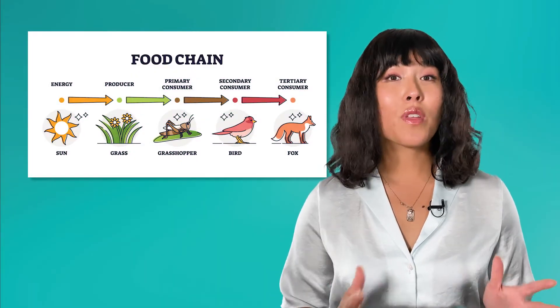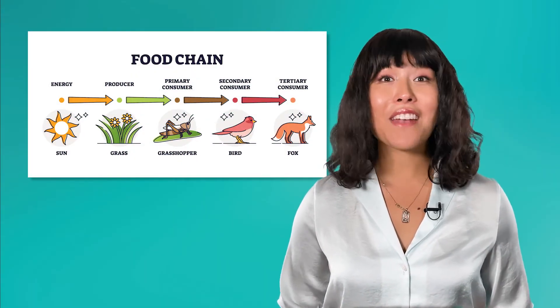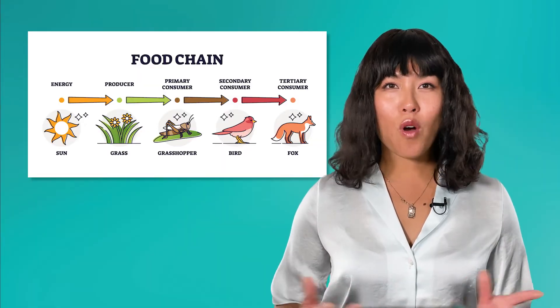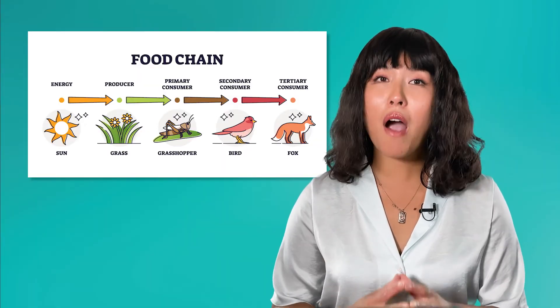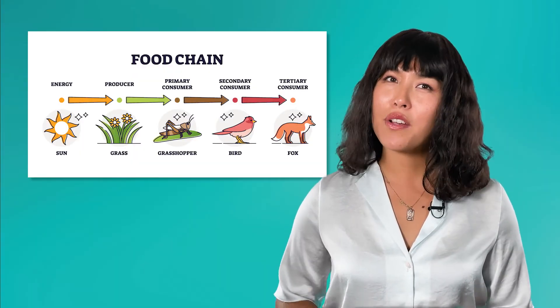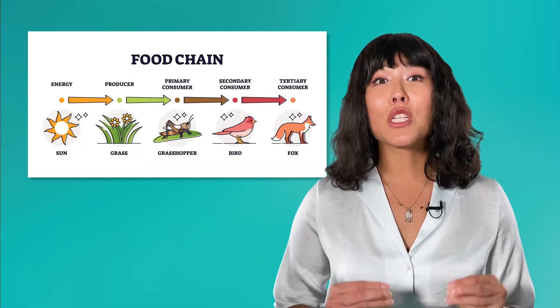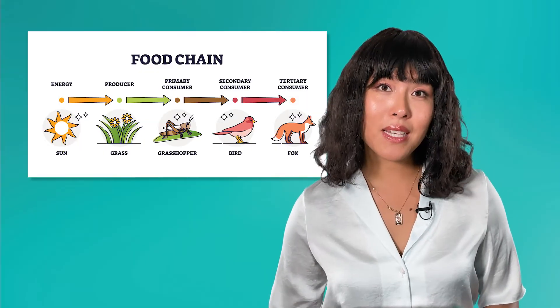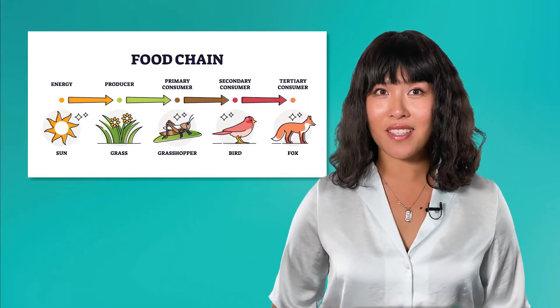Let's go back to our food chain one more time. Starting with the grass, then the grasshopper, birds and finally the fox. I want you to take a moment and think about the populations of each of these species. Specifically, I want you to focus on the relationship between the organism's placement in the food chain and its population size.